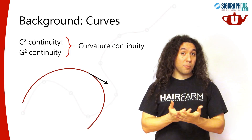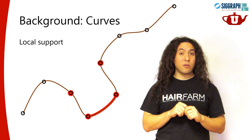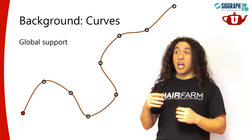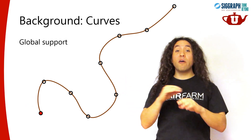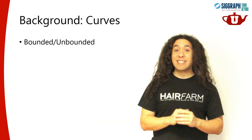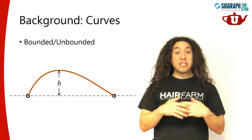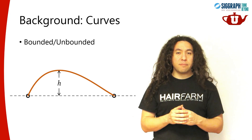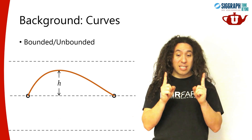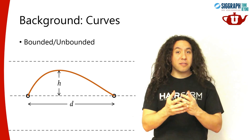Another important property is local support. If the curve has local support, that means the shape of a curve piece is determined by the neighboring control points only. If it doesn't have local support — that is, it has global support — then a change to any control points would change the shape of the entire curve, which is of course undesirable. There is also the concept of bounds: the distance of a curve piece between two control points to the line that connects those two control points. If it's unbounded, the curve can be arbitrarily far from the line. If there's an upper bound to that distance based on the distance between the two control points, regardless of where the other control points are, I'll call it bounded — which is another desirable property.